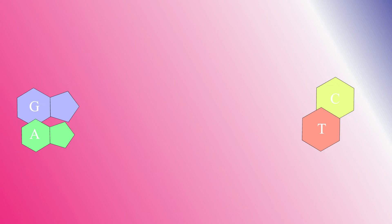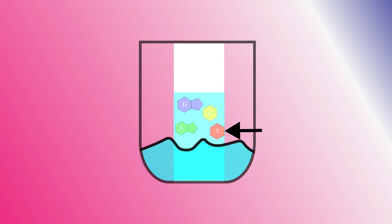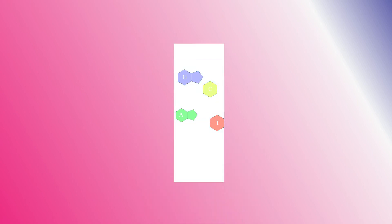They could then separate the bases using paper chromatography, the fancy word for separating molecules based on how much they like to travel with a liquid. For example, C prefers to travel further than T, as it shares similar chemical properties to the liquid being used rather than the paper. They could then cut out different parts of the paper to obtain each individual base.